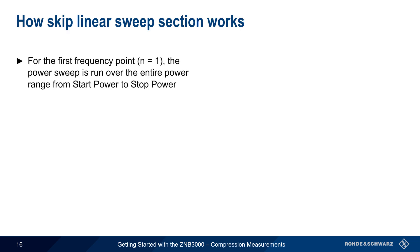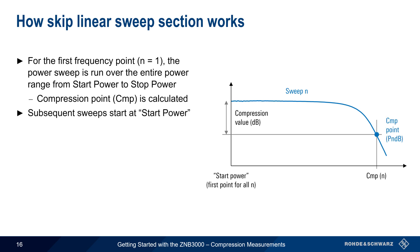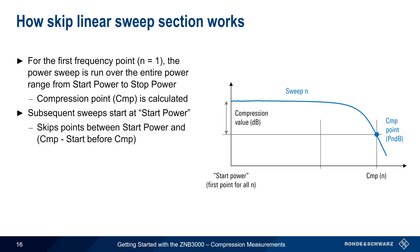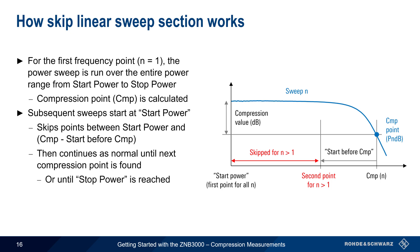For the first frequency point, the compression sweep runs over the entire power range from start power to stop power, or until the compression point is found. Subsequent power sweeps will start at the start power but will then skip all sweep points between the start power and a defined input power — specifically, the compression power minus the user-entered value for Start Before Compression. The power sweep then continues from this second point as normal, until the next compression point is found or until stop power is reached. This process is repeated for each frequency point, with the goal of reducing overall measurement time.